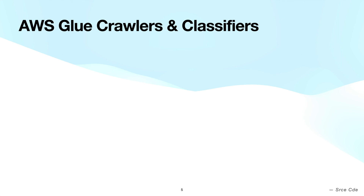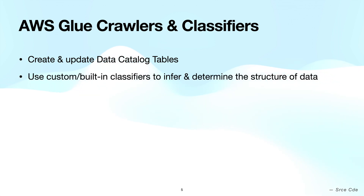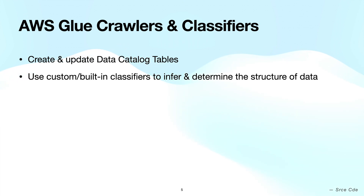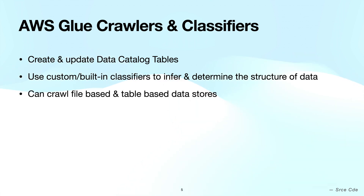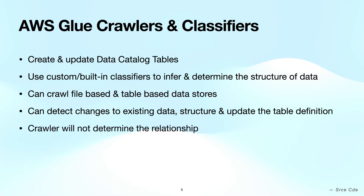AWS Glue crawlers are programs that connect to data stores, use classifiers to infer and determine the schema of your data along with other information, and finally create or update metadata within AWS Glue Data Catalog in the form of table definitions. AWS crawlers can crawl both file-based and table-based data stores. When run periodically, they can detect new data or changes to existing data including table definition changes. However, the crawler cannot determine relationships among tables.